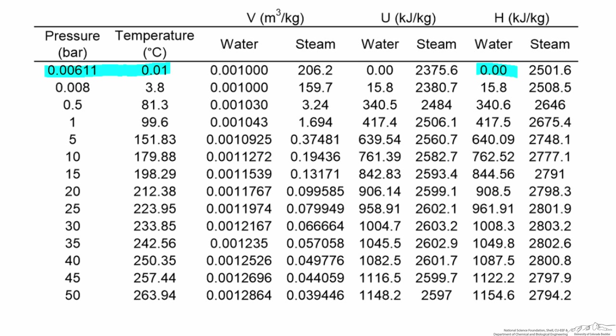So if we set that as our reference state, we can look up, for example, the enthalpy of saturated steam at 40 bar, right here, 2800.8 kilojoules per kilogram. One thing to note is that the enthalpy for saturated steam at the triple point is not zero. That's the importance of setting a phase as well as the temperature and pressure as your reference.